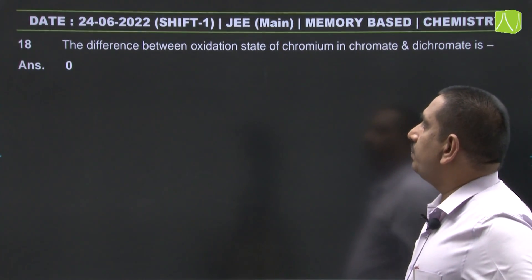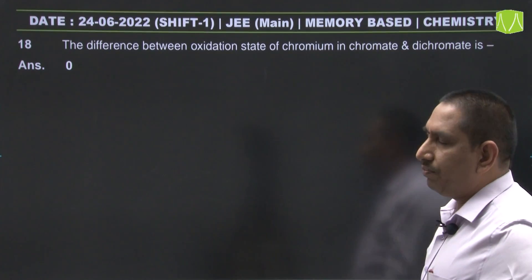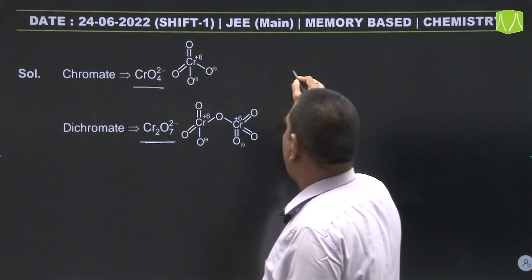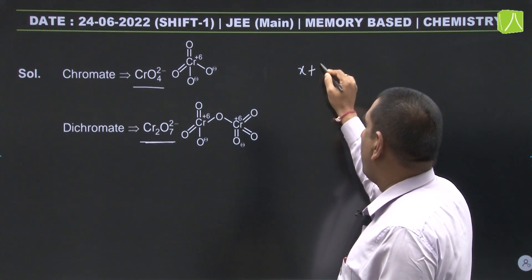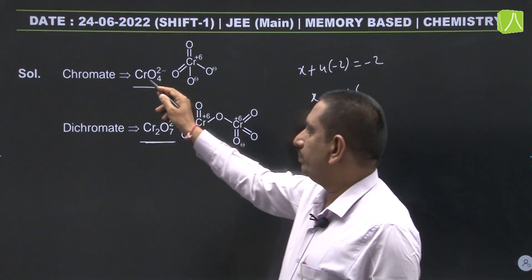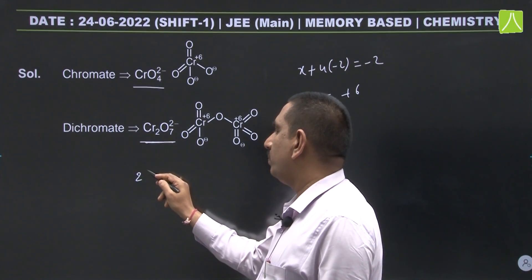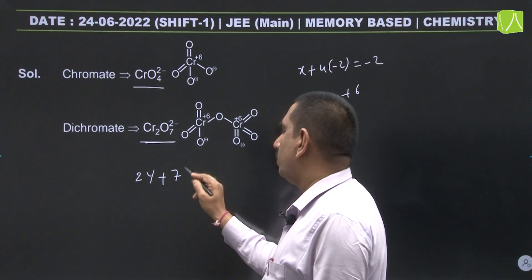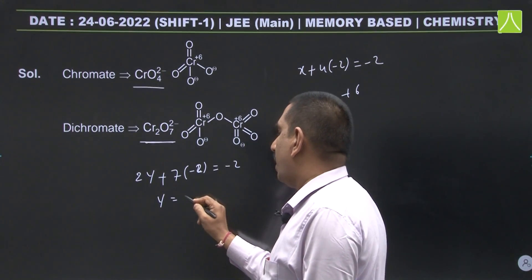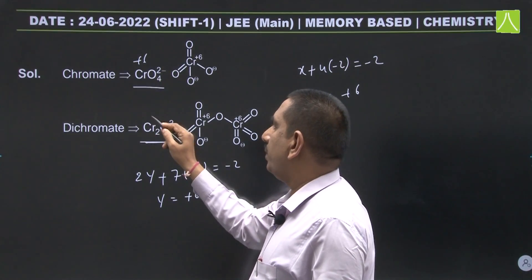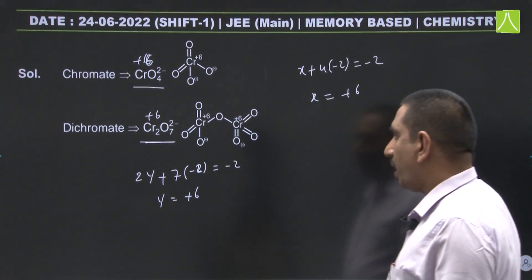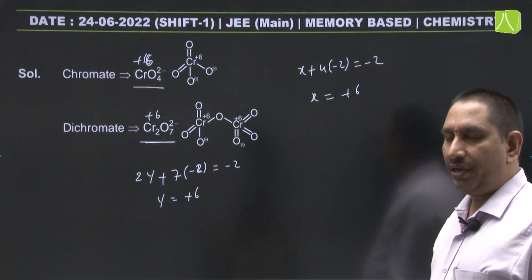The difference between the oxidation state of chromium in chromate and dichromate: in chromate ion, taking oxidation state as x, x + 4(−2) = −2, giving x = +6. In dichromate, 2y + 7(−2) = −2, giving y = +6. Both are +6, so the difference is 0. This is an integer type question.